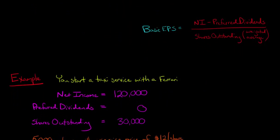So let's take our example from the previous video. You start a taxi service with a Ferrari, you've got a net income of $120,000, preferred dividends of zero, and then you have a weighted average shares outstanding during the period of 30,000.